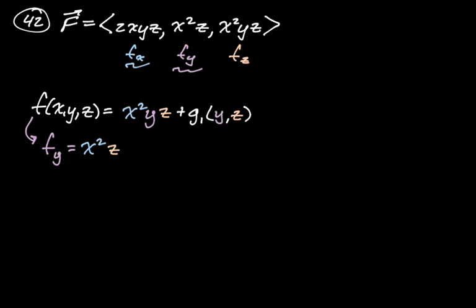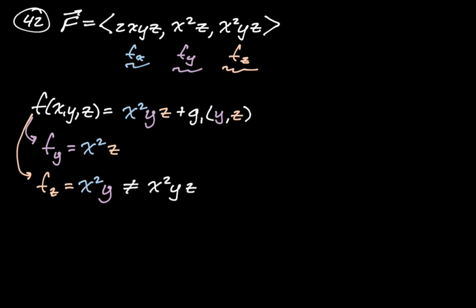Looking at partial z: the derivative of x²yz with respect to z is x²y. But the actual partial z component in the vector field is x²yz, not x²y. Since those don't match up, this can't be our potential function. There is no potential function.